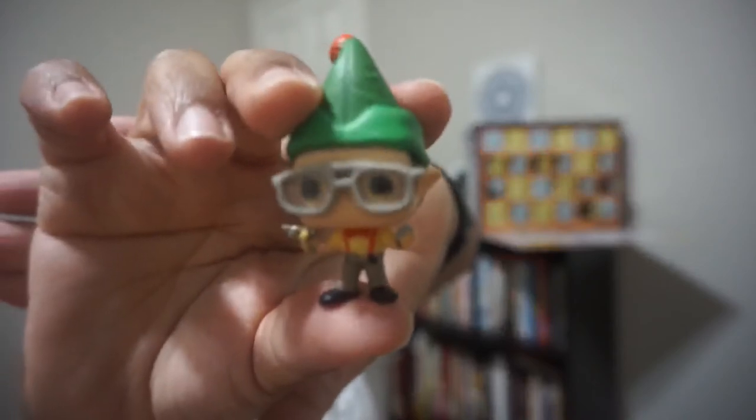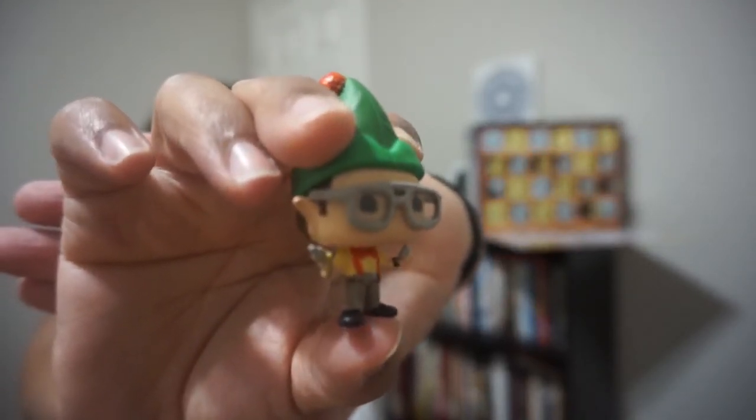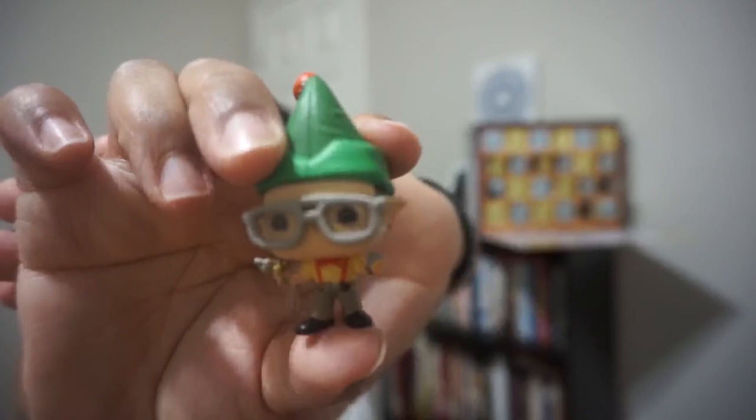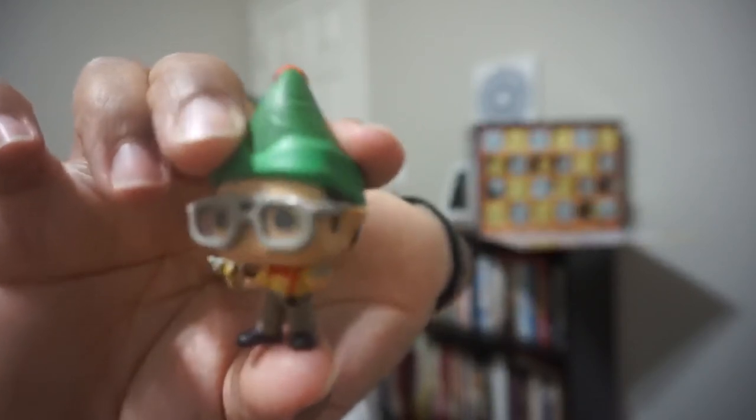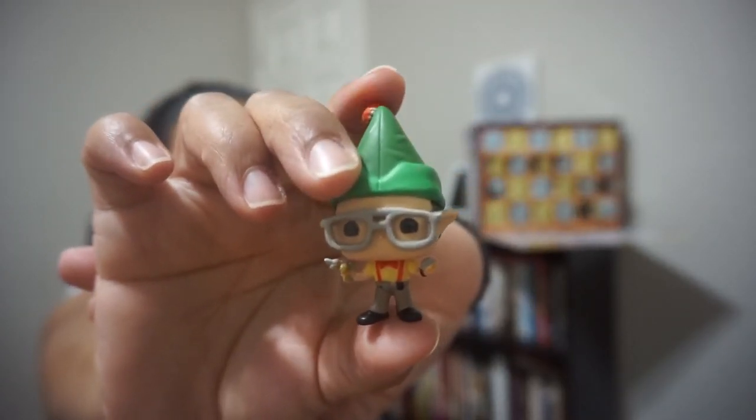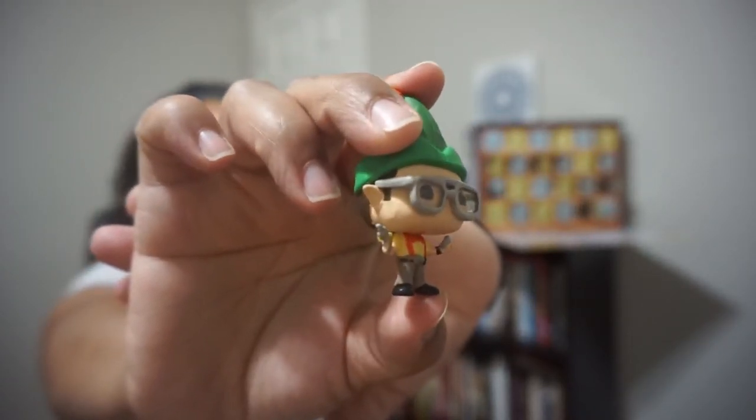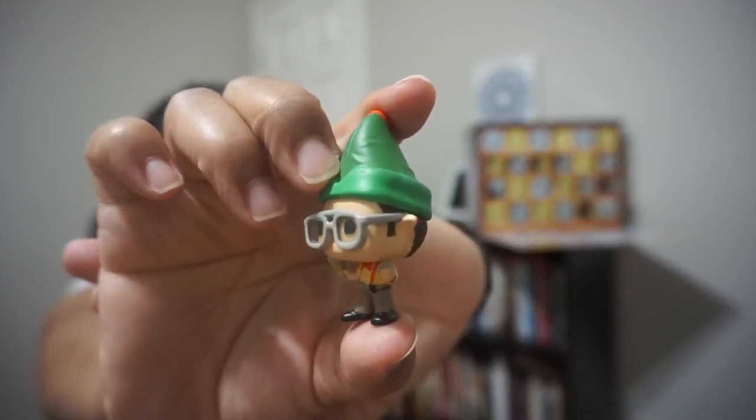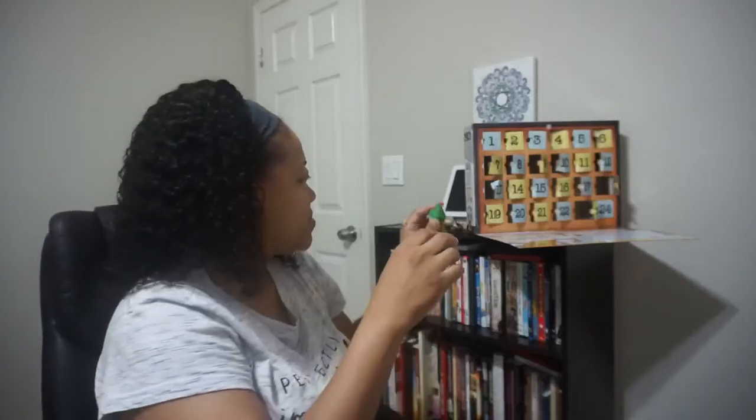Door number 23. We're almost done guys. This looks like Dwight. This looks like Dwight. And I just can't remember like what episode this was, but I love the detail. He's an elf. So, so nice. So nice.